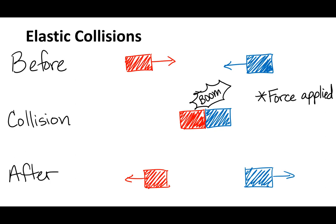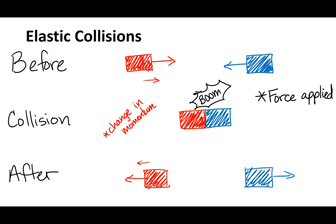Let's look at the red object. The red object is initially going to the right. Then after it gets hit, it goes to the left. That is a change in momentum — it's not a change in mass since it's still the same object, but it is a change in velocity, which is one of the components of momentum.